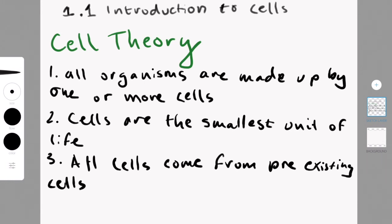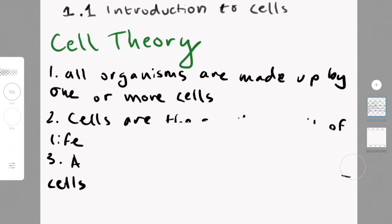All cells come from pre-existing cells is the last statement. The evidence for this comes from an experiment that a scientist called Pasteur. Turns out I don't know how to pronounce that. I'm not French, I'm very sorry. He is French, and you'll find out more about that experiment in a future chapter.